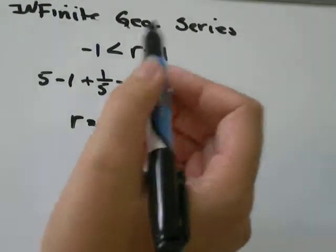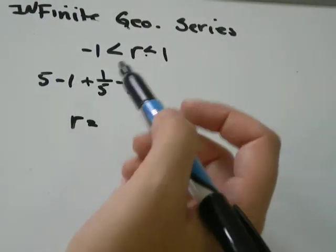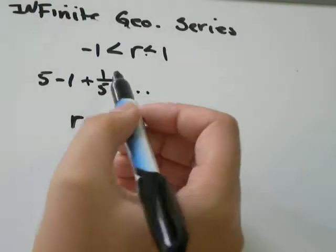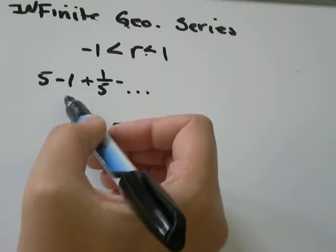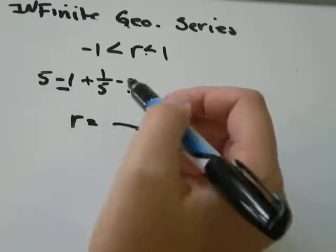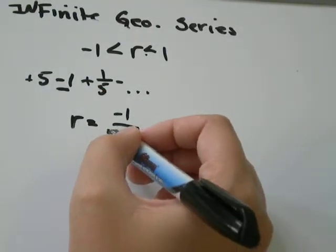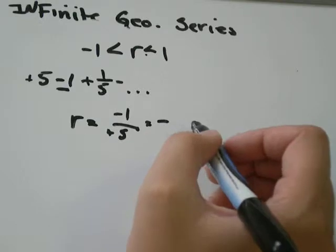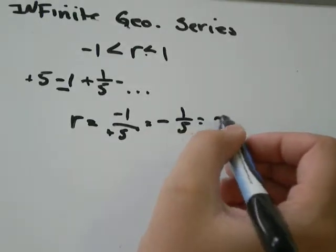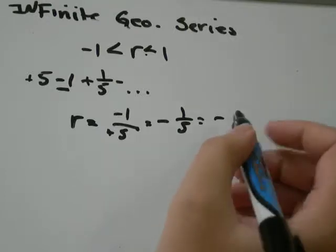So all you need to do is take one term, including its sign, and divide by the term in front of it. So I could do 1 over 5 divided by negative 1 would work. Or it would be a lot easier to go negative 1 divided by positive 5. A negative divided by a positive is negative. And 1 over 5, 1 divided by 5 is just 0.2.